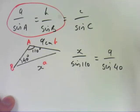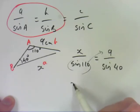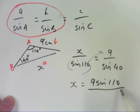So if we want to rearrange that to get X on its own, the first thing we do is we multiply that over to the other side. So X equals 9 sine 110, all divided by sine 40. So that'll give us an X value.